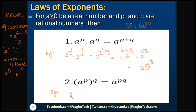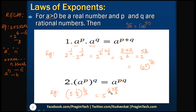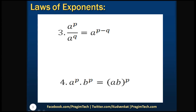Let's consider one simple example: (5 to the power of 1/2) to the power of 2/3. According to this law we write it as 5 to the power of (1/2 × 2/3). Cancelling the 2s, this equals 5 to the power of 1/3.